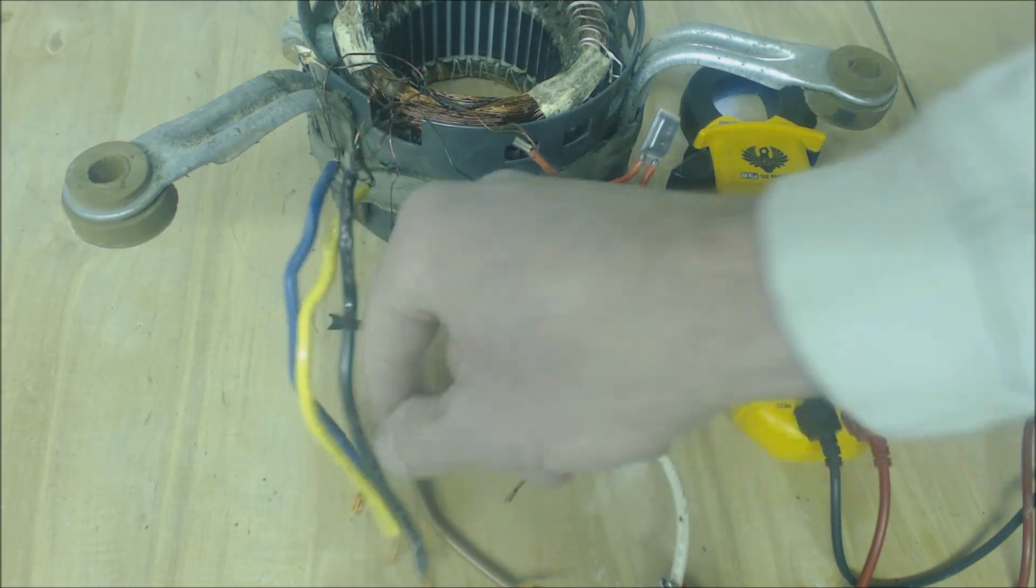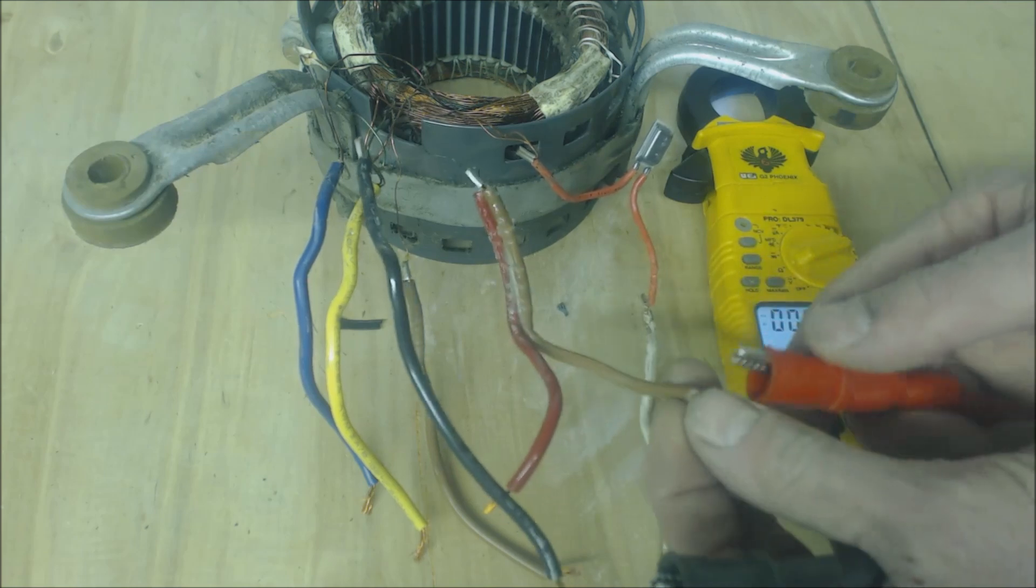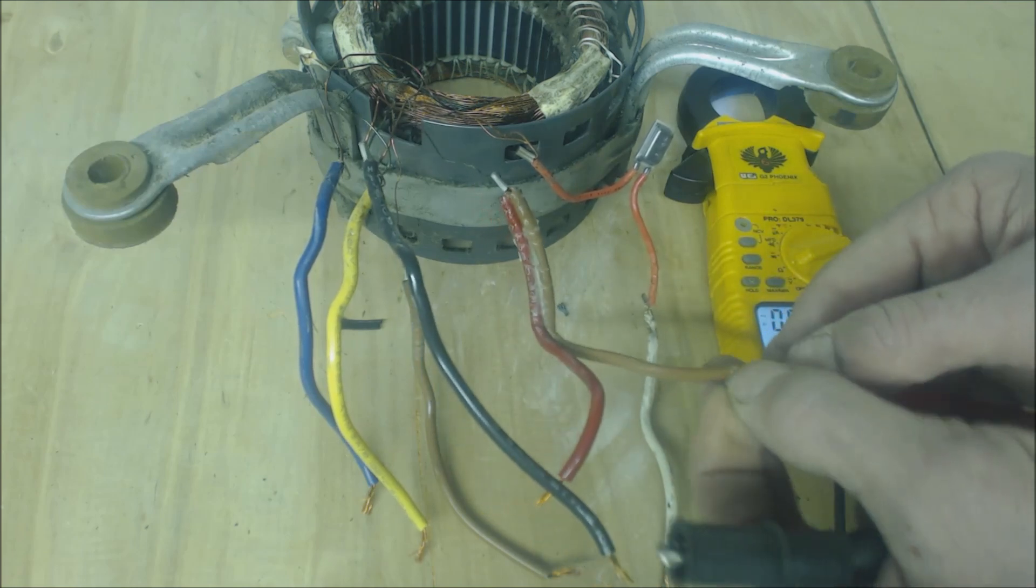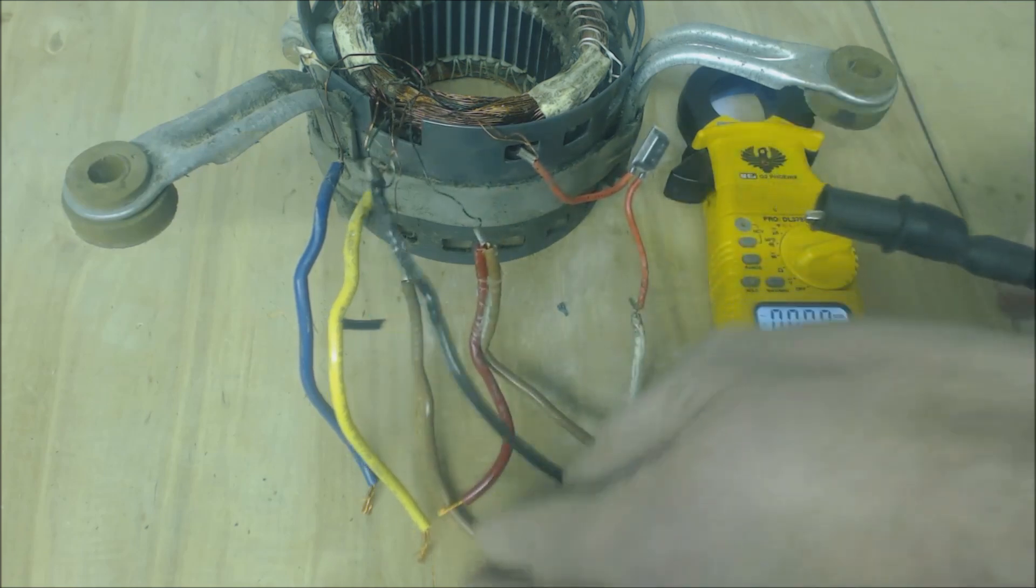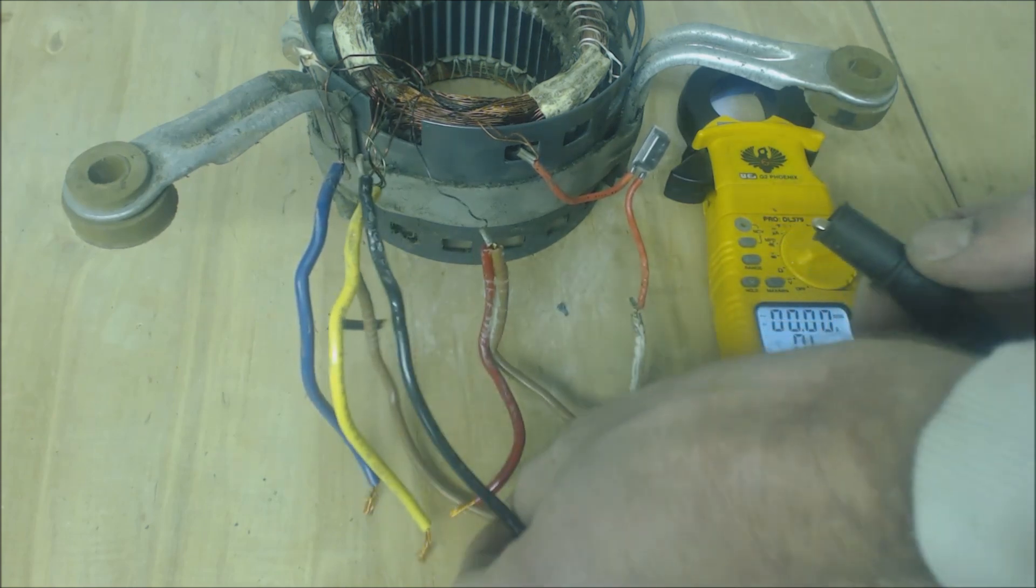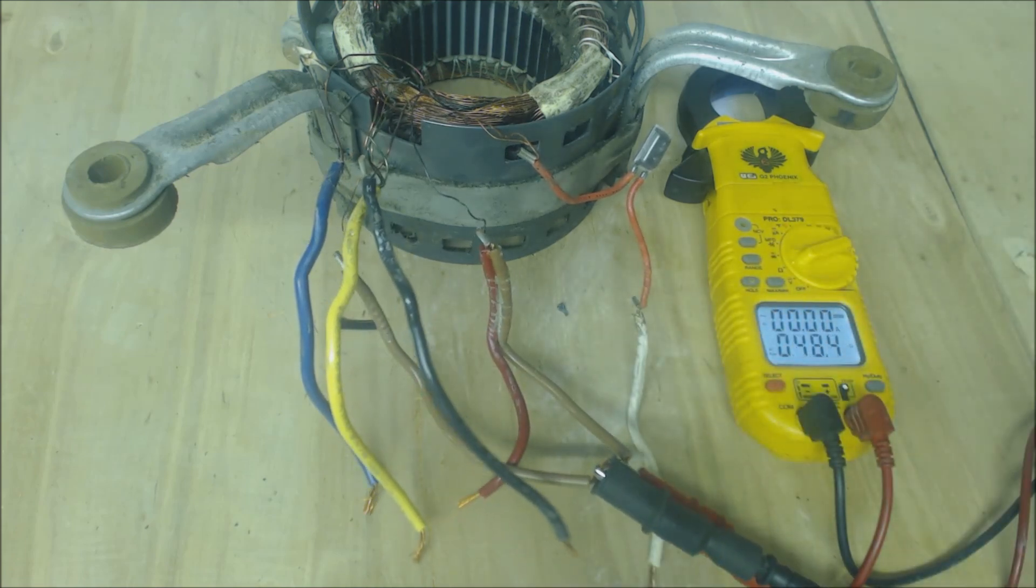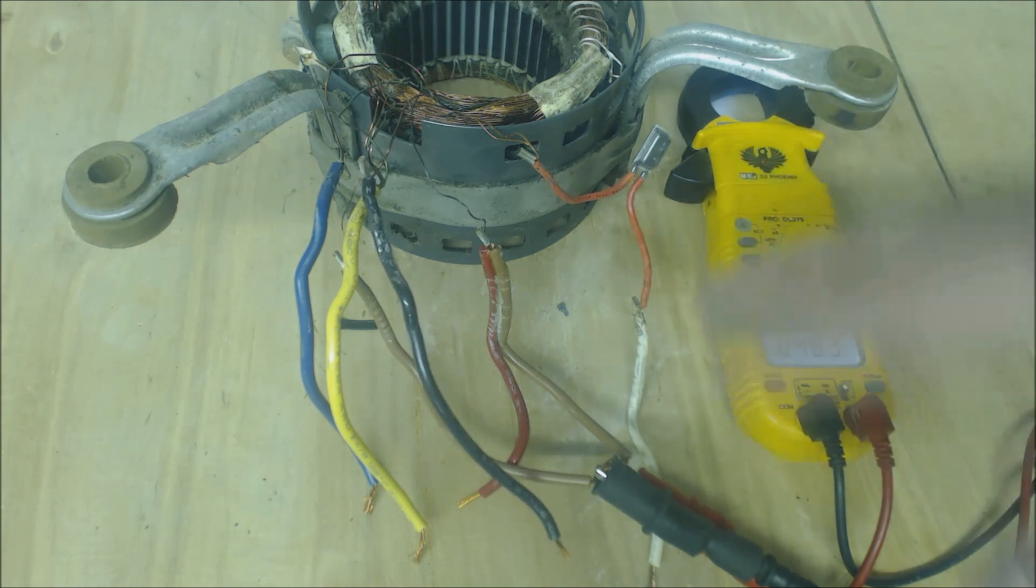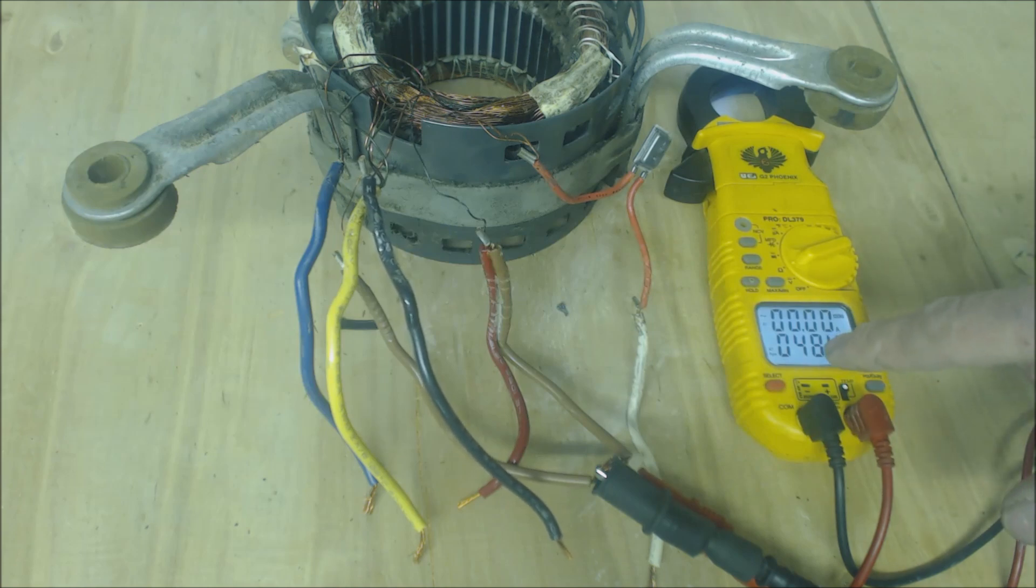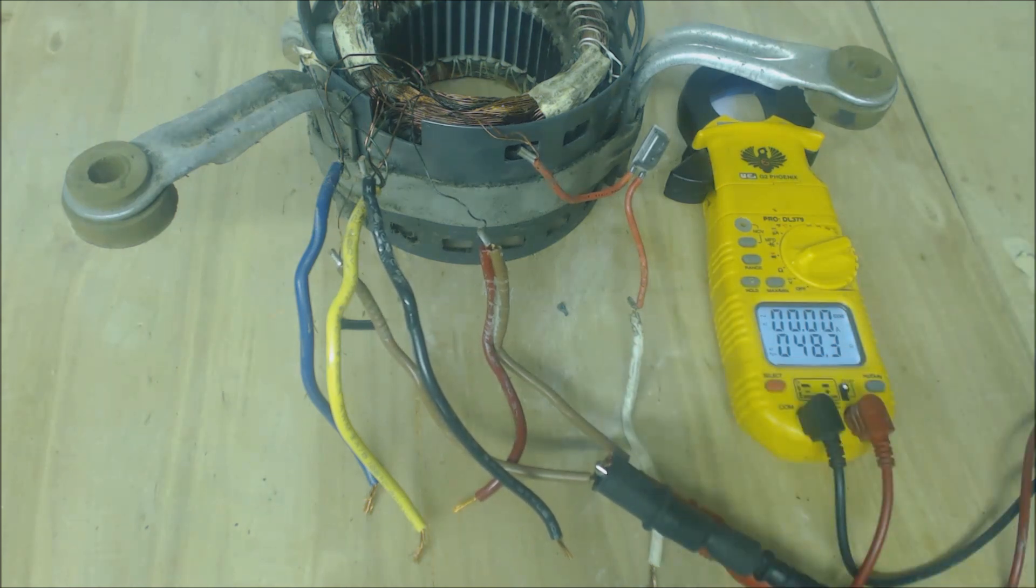Then you have your brown wires right here. Just while we have this out, your resistance values between your brown wires, which go to the capacitor, are going to be a lot higher. So if they were ever open, then you would know that your start windings are bad. Right there you have 48 ohms of resistance. They're going to be somewhere in the neighborhood of 25 to 75 ohms. A lot of motors you're going to see right around that 50 ohm range for their start winding.